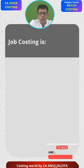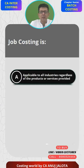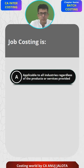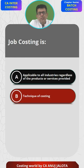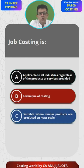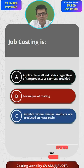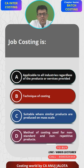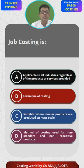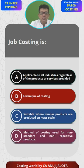Job costing — four options. A: applicable to all industries regardless of the products or services provided. B: technique of costing. C: suitable where similar products are produced on a mass scale. And D: method of costing which is used for non-standard and non-repetitive products.